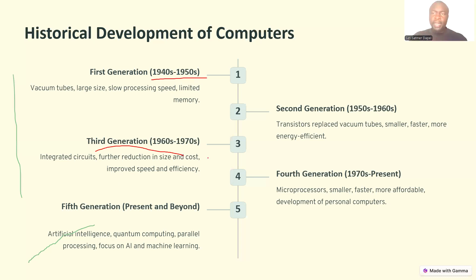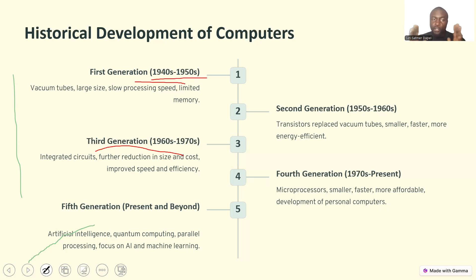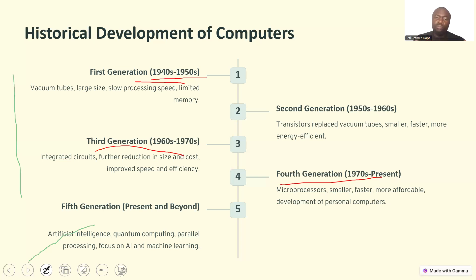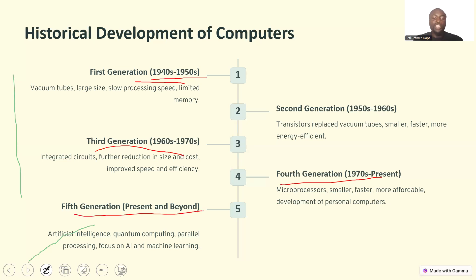From the first to the third generation we observe a clear trend: the size gets smaller and the speed increases. In the fourth generation, during the 1970s, microprocessors were produced — much smaller, way faster, and more affordable — and this led to the production of personal computers.